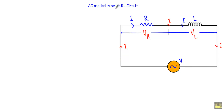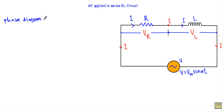In this video, I will show you a series RL circuit. I have a resistor R connected in series with an inductor L, supplied by an alternating voltage source V, given by V = Vm sin(ωt). I will show the phasor diagram of this RL circuit step by step, talk about the voltage triangle, and show the phase relationship between the applied voltage V and the current I flowing in the circuit.